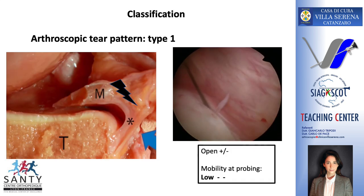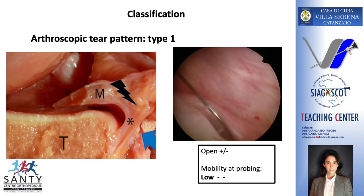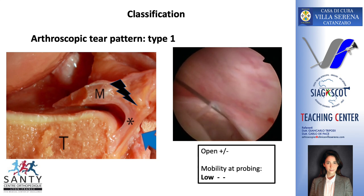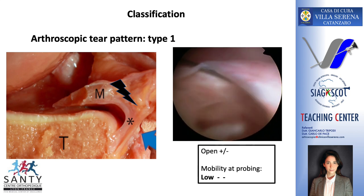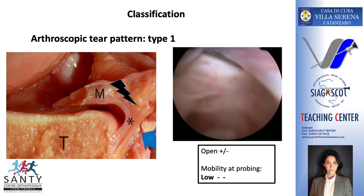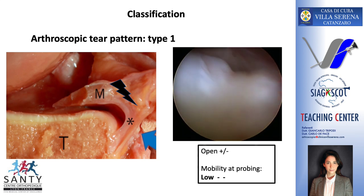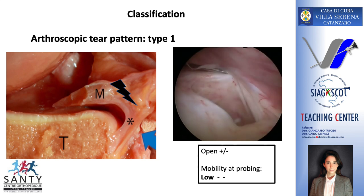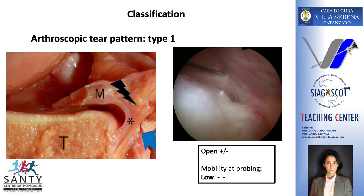Here we can see each type of RAMP lesion during arthroscopy. This is the type 1. It's a very peripheral tear. It's considered a true RAMP lesion. This tear is very low. It's important to do a posterior medial exploration because this kind of tear can be easily missed on MRI.